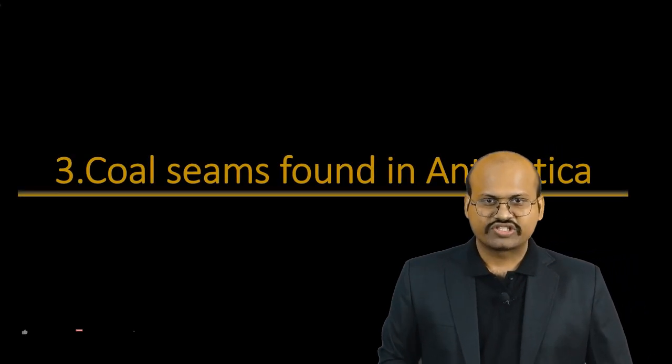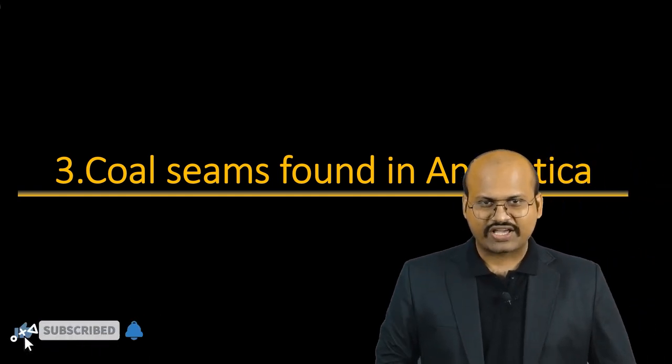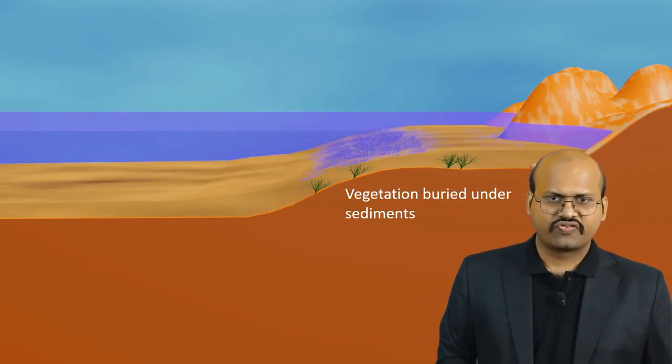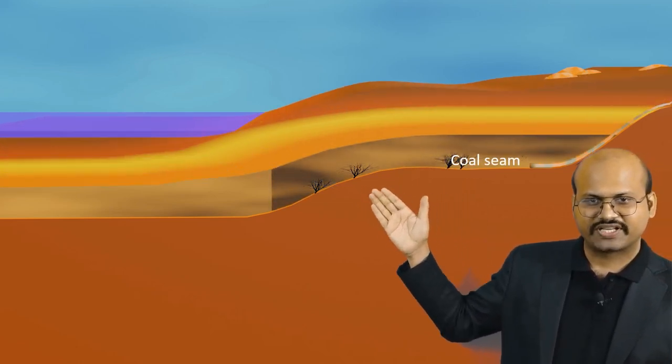The next evidence is coal seams found in Antarctica. Before discussing why coal seams found in Antarctica act as evidence of continental drift, let's discuss how coal seams are formed. For formation of coal seams, we need large vegetation. This layer of vegetation gets buried under sand due to floods or landslides. Over millions of years, this layer gets buried under other layers, and the buried vegetation is subjected to heat and pressure.